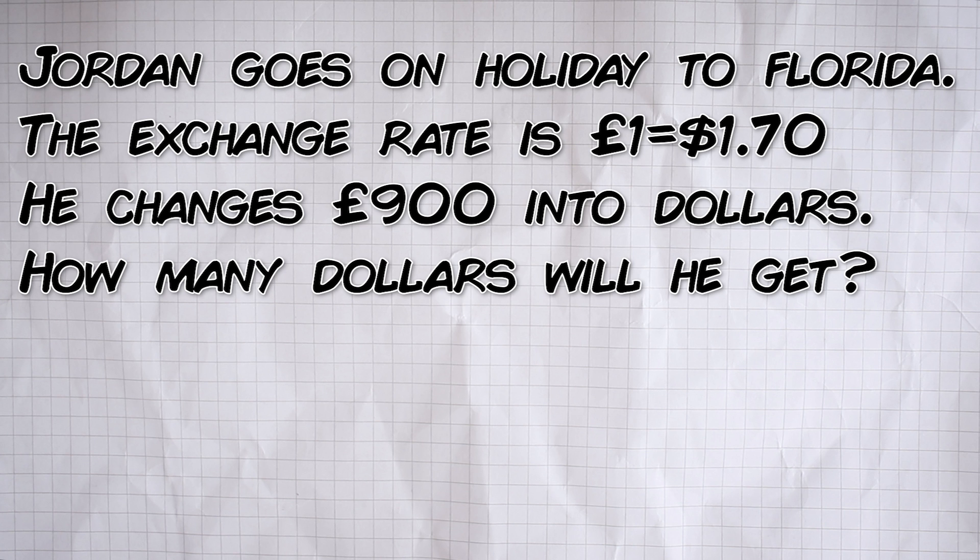Jordan goes on holiday to Florida. The exchange rate is £1 is equal to $1.70 and he changes £900 into dollars. How many dollars will he get? We know that £1 is equal to $1.70 and we want to know how many dollars £900 would be. Using this method, we write it out as a ratio like this.